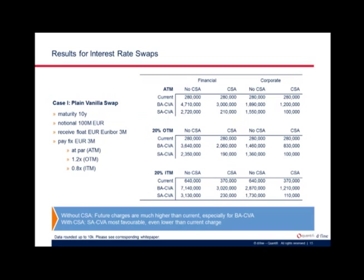All three swaps have maturity of 10 years and 100 million euro notional. Moneyness is created by changing the fixed coupon at par, 20% below par, and 20% above par. Looking at the tables, comparing the upper row and middle row in each table, BACVA charges are significantly higher than current methodology — especially for the no CSA case. For at-the-money with no collateral, capital requirements increased almost 17 times versus all other methodologies. It's most favorable in the case when collateral is paid.